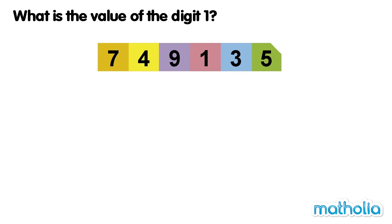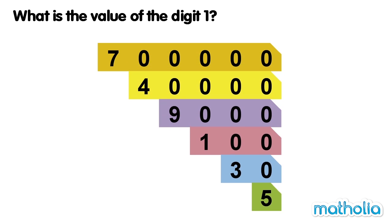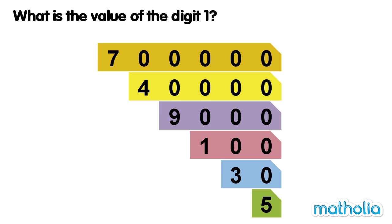What is the value of the digit 1? Place value cards have been used to make the number 749135. Let's find the value of the digit 1. Let's separate the number into its different place value cards. We can see that the digit 1 has a value of 100.